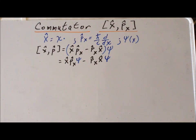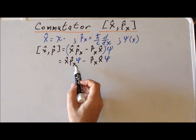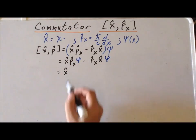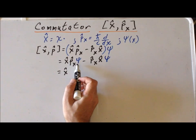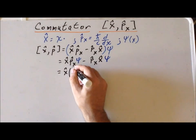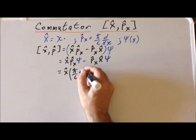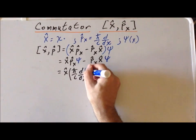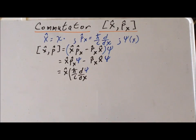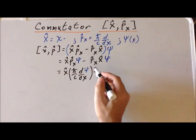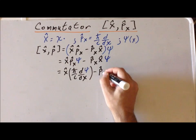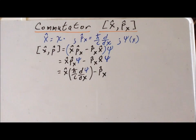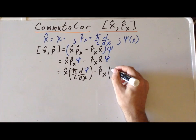Whenever we have quantum mechanical operators, we operate on the function from right to left. So this is equal to the position operator acting on the momentum operator acting on the function, minus the linear momentum operator acting on the position operator acting on the function. The momentum operator acting on psi gives h-bar over i times the first derivative acting on psi. For the second term, the position operator acting on psi is simply multiplying by x, giving x times psi.